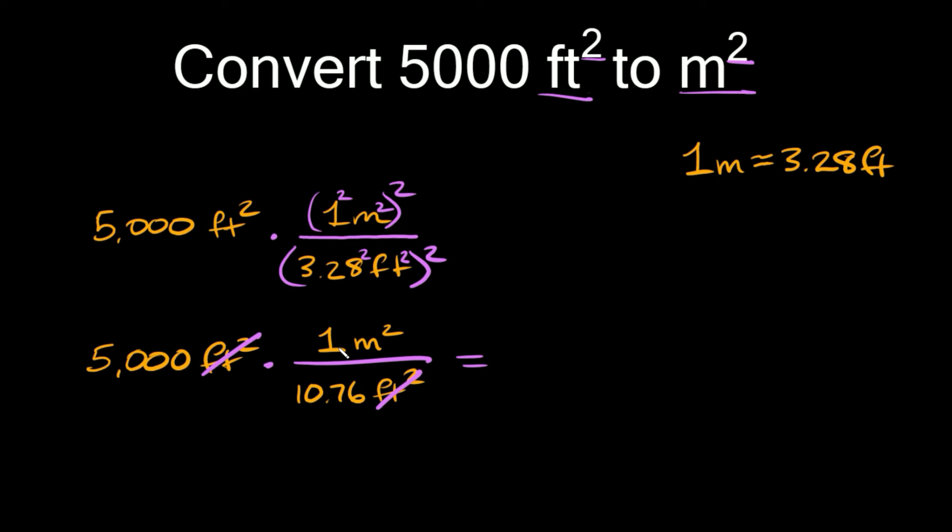So on top we have 5,000 times one meter squared. Well 5,000 times one is simply equal to 5,000. And then we have our units meters squared so don't forget those. And then on the bottom we just have 10.76. So we're going to divide this whole thing by 10.76.